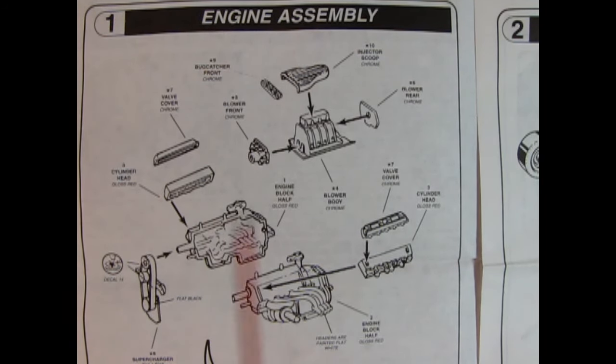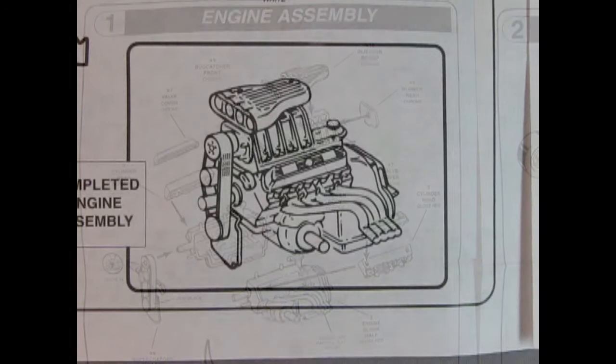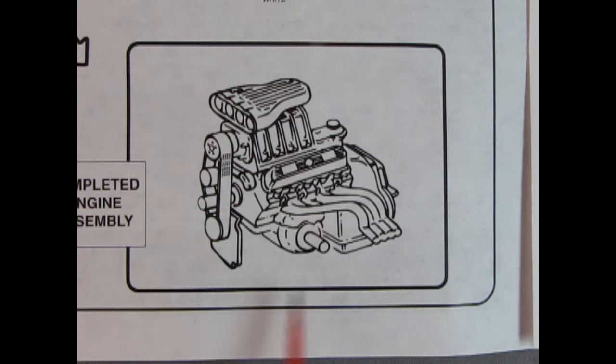Step one shows the engine assembly. You're going to build two of these engine blocks but only one is shown. We have the injector scoop which is chrome, the bug catcher front, blower front cover, blower body, and blower rear cover. All of these are chrome components. Then you have chrome valve covers, plastic cylinder heads, the right and left hand side of the engine with headers molded in place, the Toronado front differential also molded in place, and the entire belt and pulley assembly. Once all your parts are together, this is what your completed engine will look like.